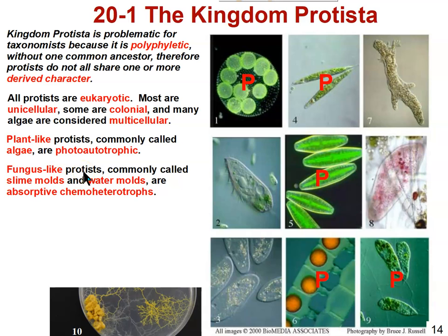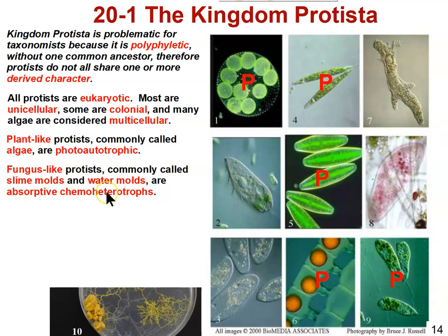We also have fungus-like protists, referred to as slime molds and water molds. It's not a classification level within the Kingdom Protista — not a phylum or anything. It's just a common way of referring to organisms in the kingdom that are fungus-like. They are absorptive chemoheterotrophs. True fungi are also absorptive chemoheterotrophs, just like these fungus-like protists. Both digest things outside the cells and then absorb the nutrients into the cells.